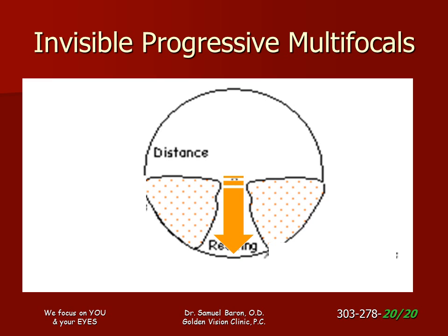Think of it like an automatic transmission. Note the smaller area for computing — you will also have to tilt your head back to look through the correct power. The dotted area of the diagram is close to your prescription, but not quite; it is needed in order to make the invisible progression.